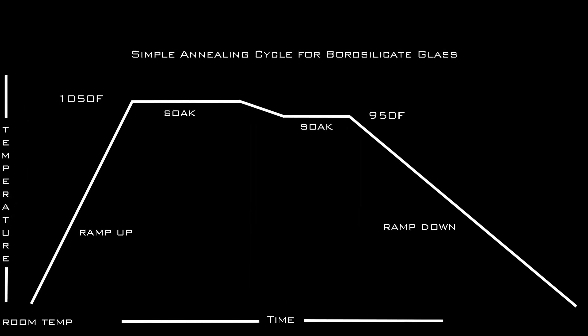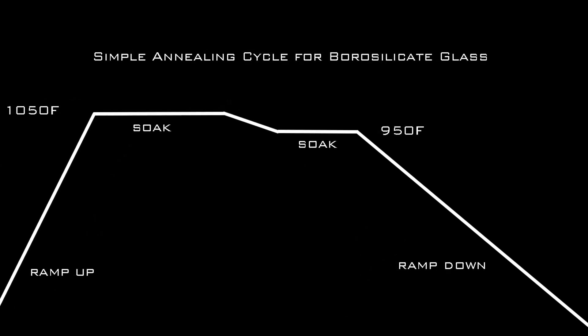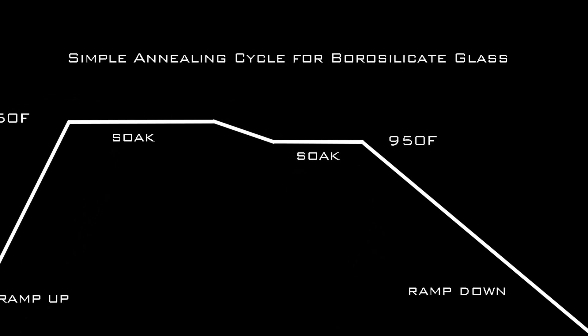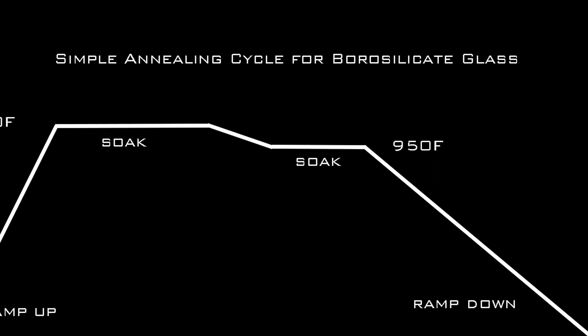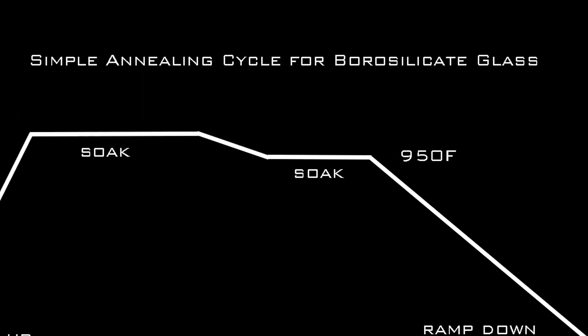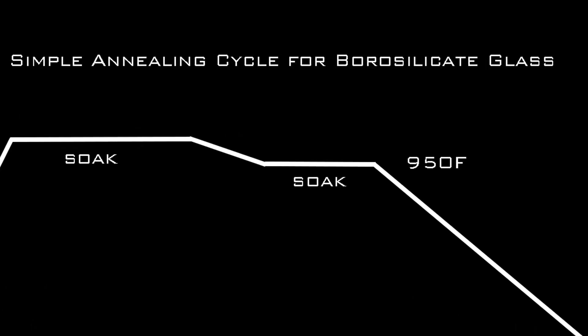Most annealing cycles have what is called a soak at the strain point. This allows the glass to return to total elasticity gradually and to sit there and stabilize before cooling to room temperature.